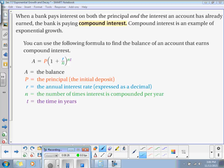When a bank pays interest on both principal and the interest an account has already earned, the bank is paying compound interest. Compound interest is another example of exponential growth. The formula for compound interest is A equals P times the quantity 1 plus R divided by N, all raised to the power N times T. Where A is the balance that you're looking for, P is the principal or the initial deposit, R is the annual interest rate expressed as a decimal, N is the number of times the interest is compounded per year, and T is the time in years.